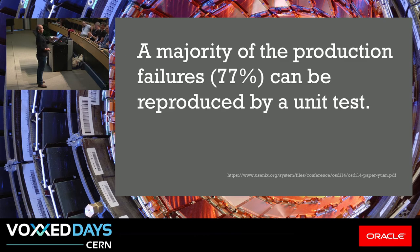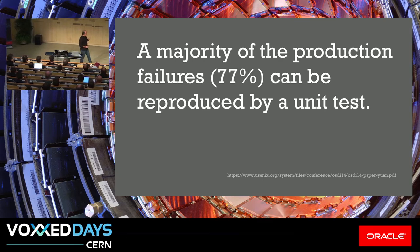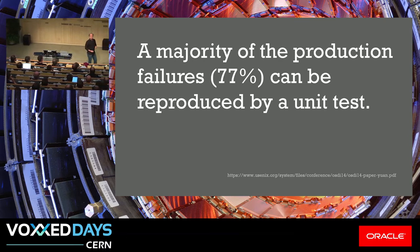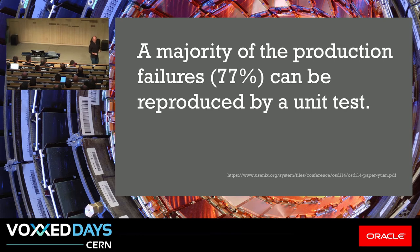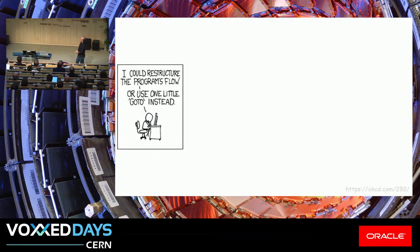A majority of production failures — over three quarters — can be reproduced by a unit test. That doesn't mean they could have been caught in advance necessarily; it simply says the possibility exists. People have failures — that's fine, up to a point. But there's the question of what you do afterwards. Where does the learning come? Failure should be considered a bruise, not a tattoo. You've got to learn from this stuff. We do have a set of practices, and sometimes when push comes to shove, we may skip them.